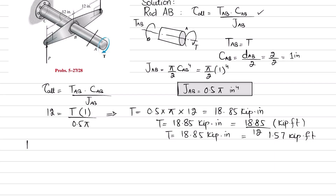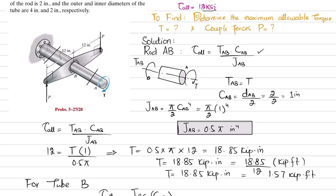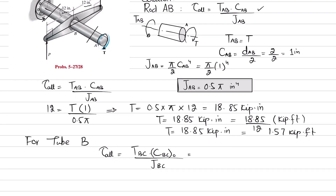Now for tube BC, the allowable shear stress formula gives: τ_allowable = T_BC · c_BC_outer / J_BC. When we cut at the tube section, the internal torque T_BC must balance the applied torque T plus the couple produced by force P on the lever arm: T_BC = T + P·12 + P·12 = T + 24P.